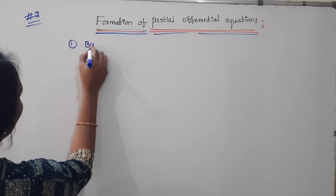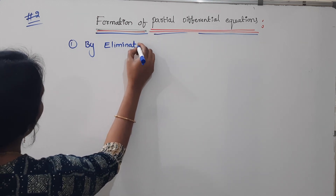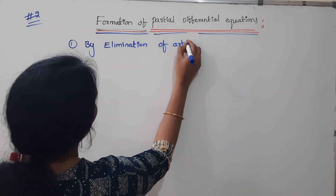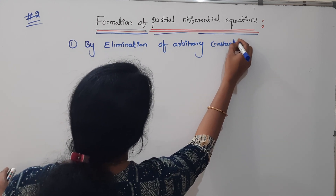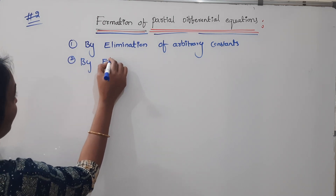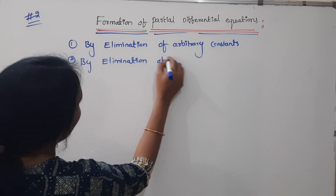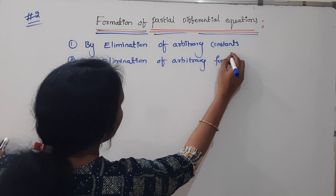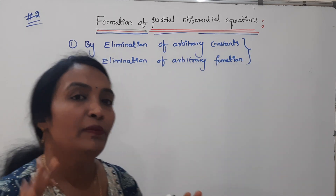The first way is by eliminating arbitrary constants. The second way is by eliminating arbitrary functions. We have problems in both of these methods in the exam, and we will discuss both of them today.